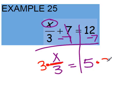We'll multiply by 3 on both sides. This will cancel out the 3 and leave us with just x equals 15.